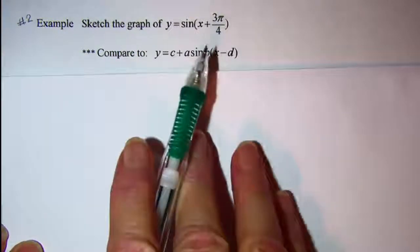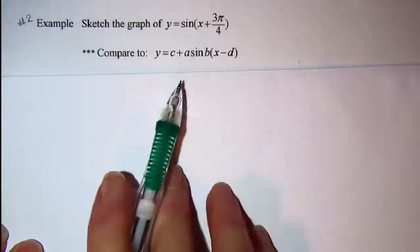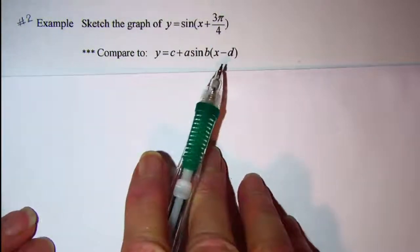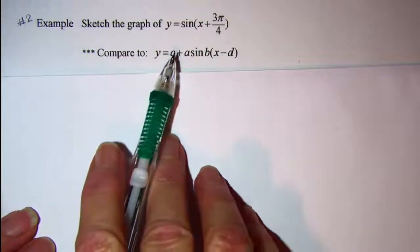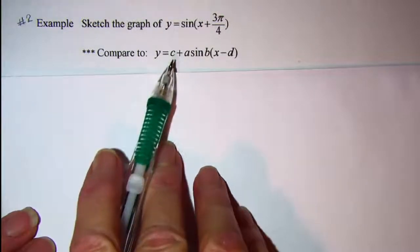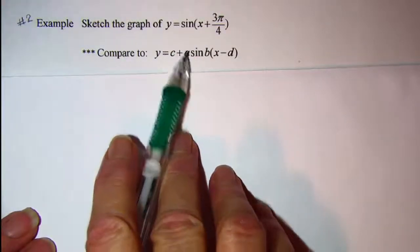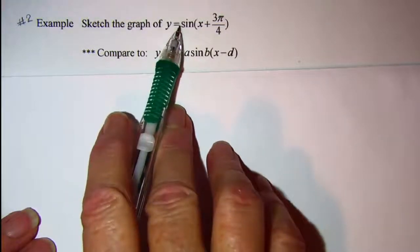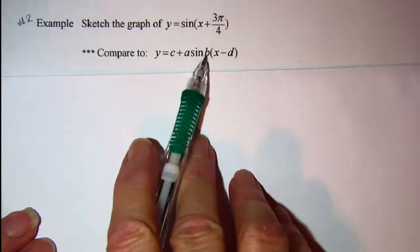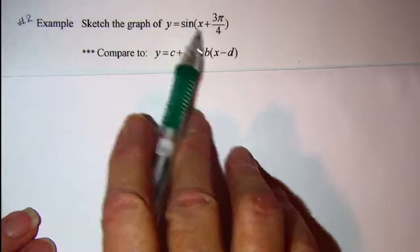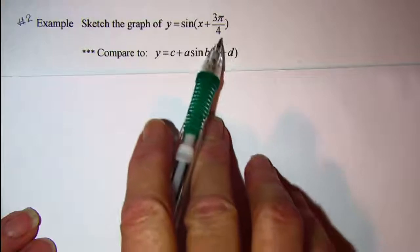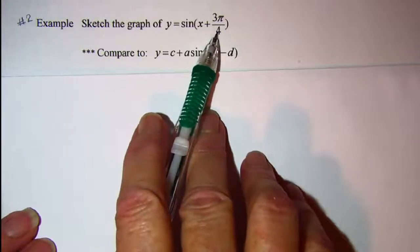Now we want to compare this equation to this general equation. Notice that we don't have a c value, our a value is 1, our b value is 1, and the d is a negative 3 pi over 4.